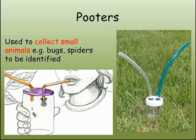A pooter is a sealed cup with two straws, one of which is placed very close to the animal you want to collect. By sucking into the other tube, the animal is drawn into the cup.